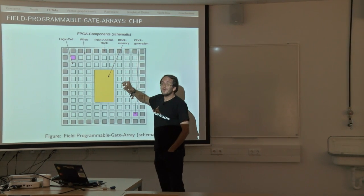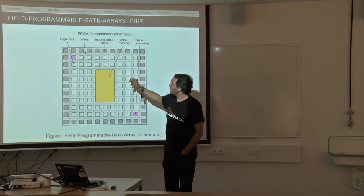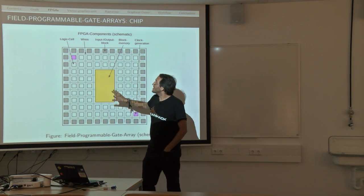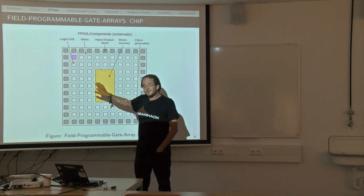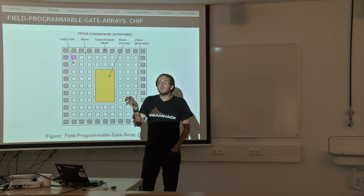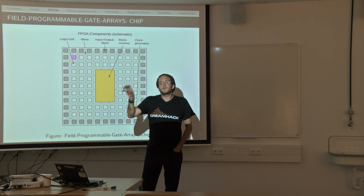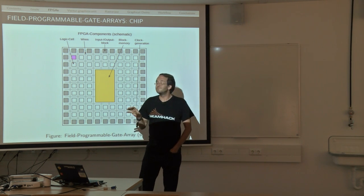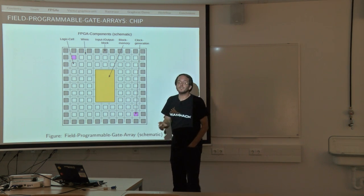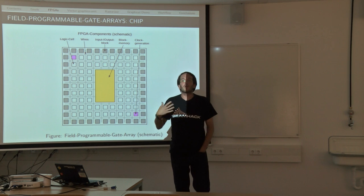There is block memory, also called block RAM, which doesn't have to be one big block in the middle. There can also be smaller parts, and that one is good for the logic cells to have a little memory beside them to store and grab data very fast. Last but not least, we have clock generations because FPGAs are clock driven.